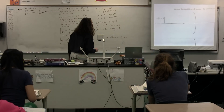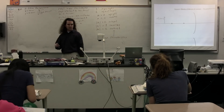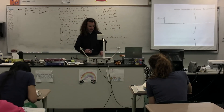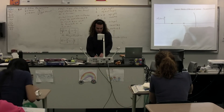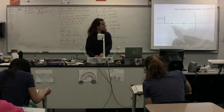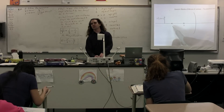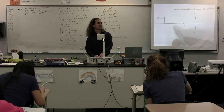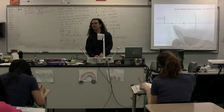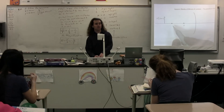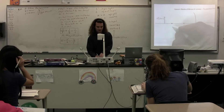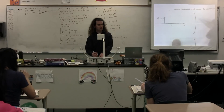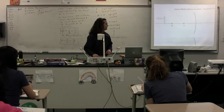Now we need to identify some points. This point right here is the focal point. This point right here is twice the focal point — the center of curvature or the radius of curvature. The radius of curvature would be the distance; the center of curvature would be the location.